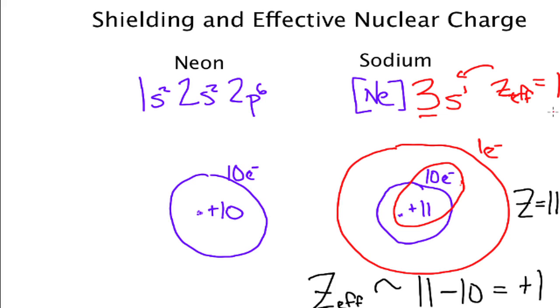But that's a lot closer to one than it is to the actual value of 11. And so we can see that this idea of shielding now will reduce the nuclear charge down to something that's much smaller.